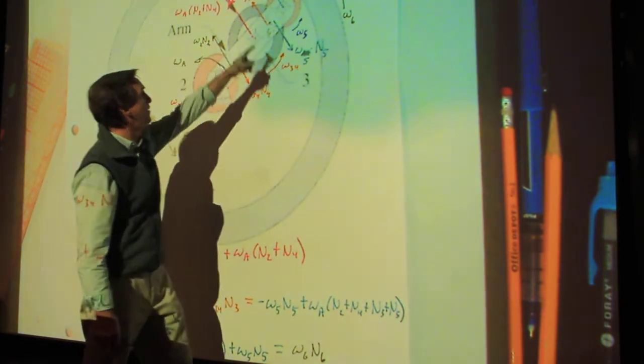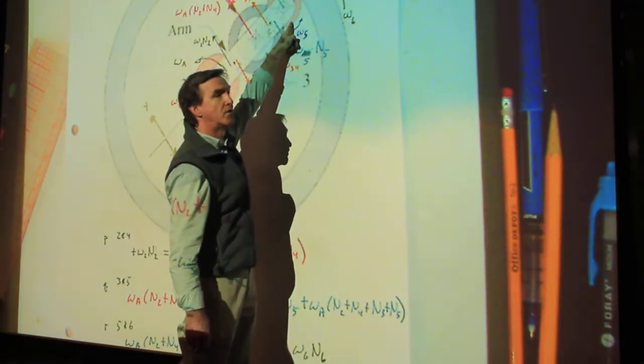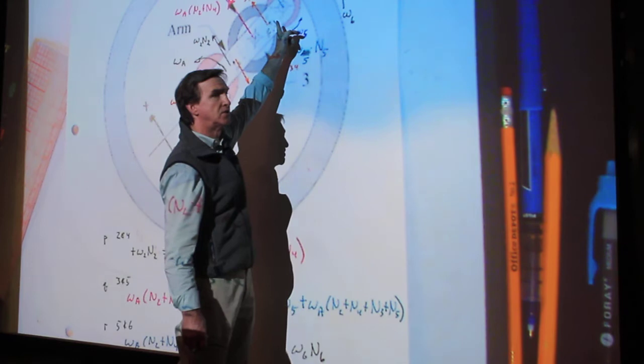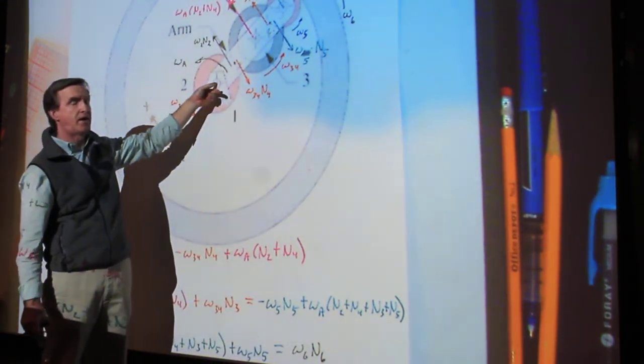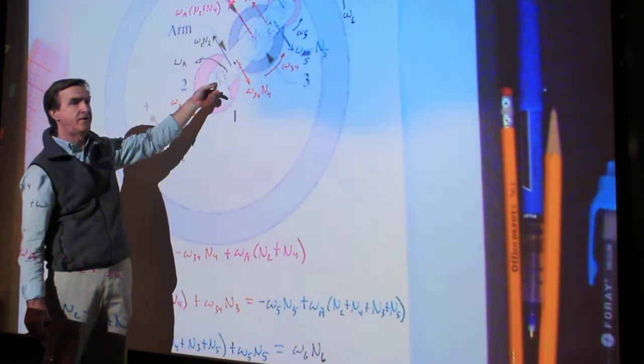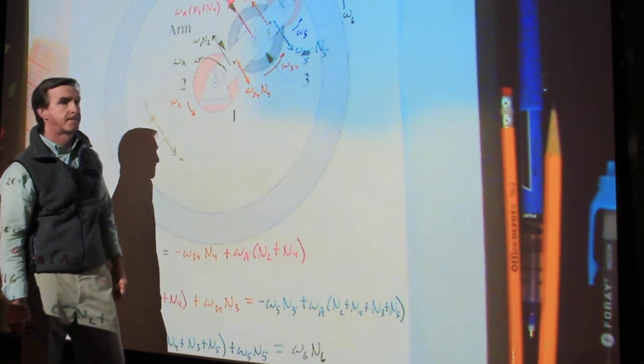Okay? Same with up here. The arm is carrying the center of gear 5, so I have to add its contribution. But on gear 2, because gear 2 is pentagram, the velocity of its center is 0. So I don't have to add anything over there.